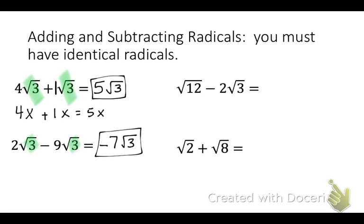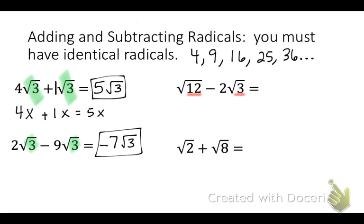With our next problem, notice that we don't have the same thing on the insides. If this happens, you can first look to simplify one of your square roots. Square root 3 can't be simplified because there's no perfect square that divides 3. But square root 12 — looking at our list of perfect squares, 9 doesn't divide 12, but 4 does.